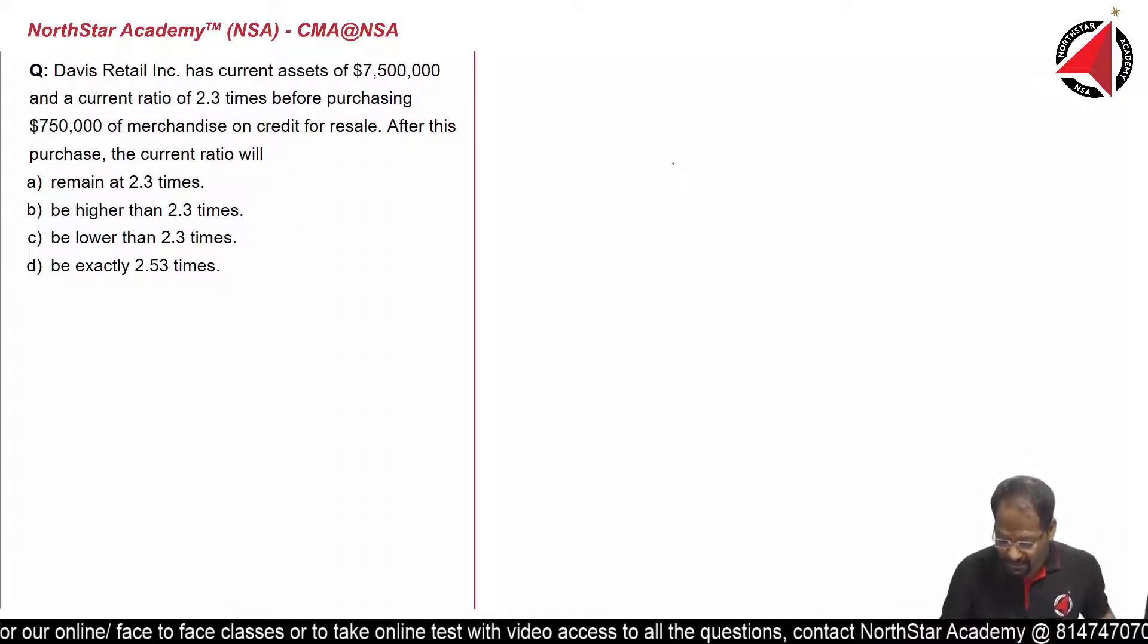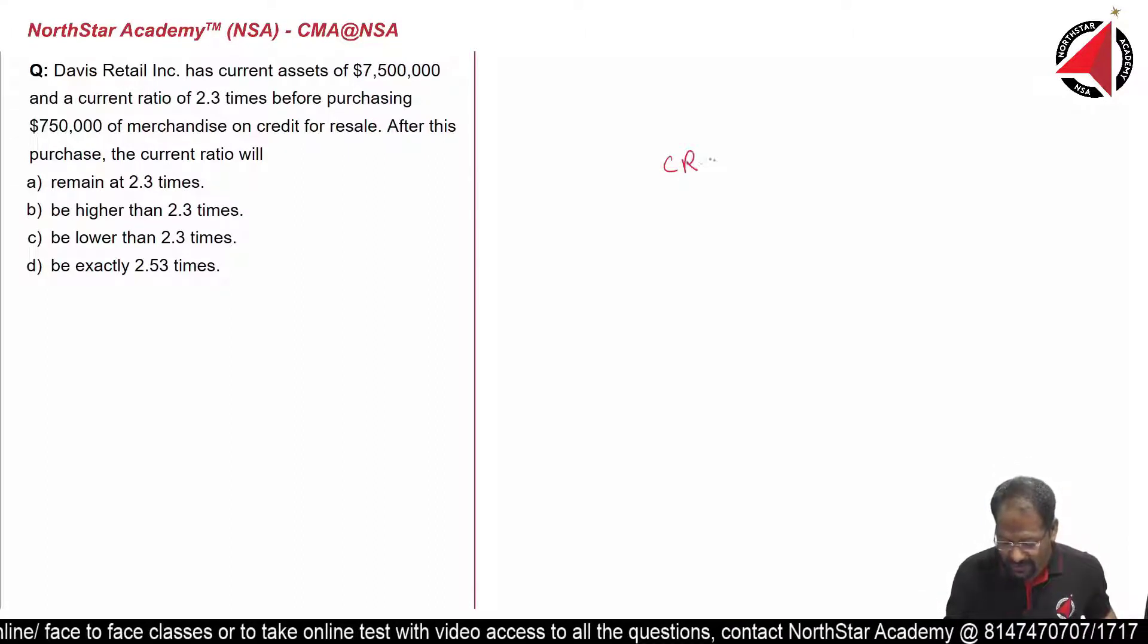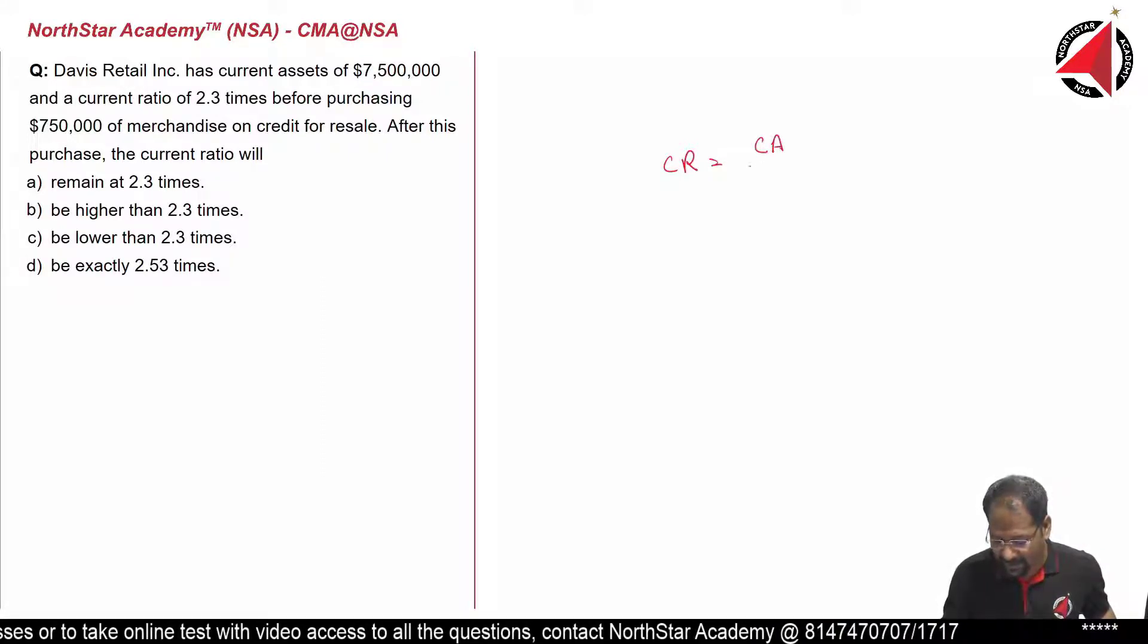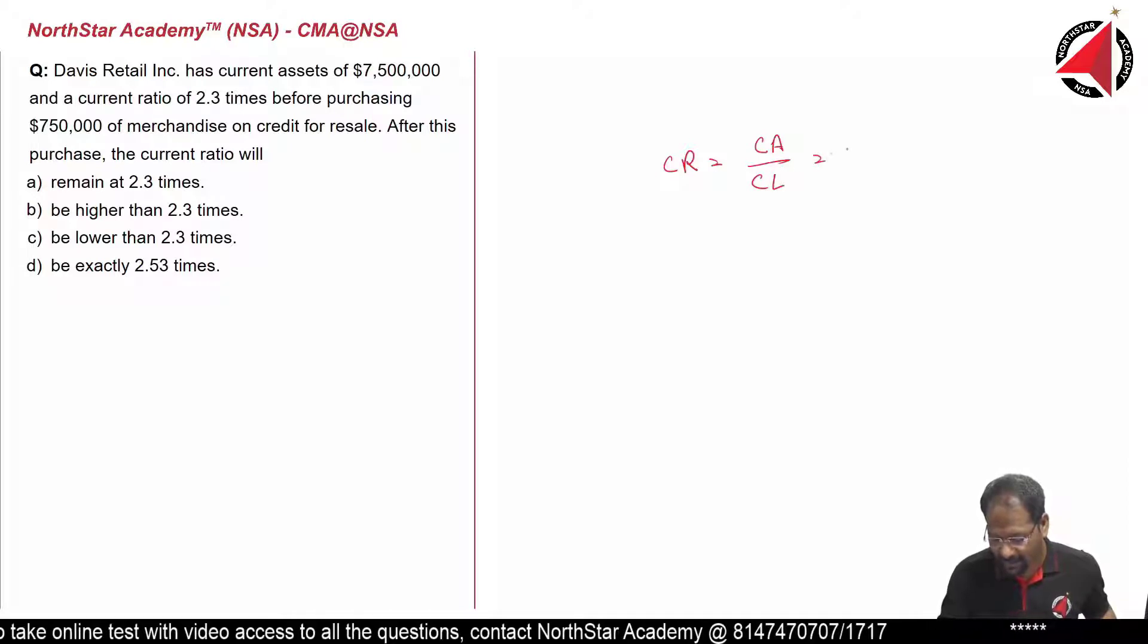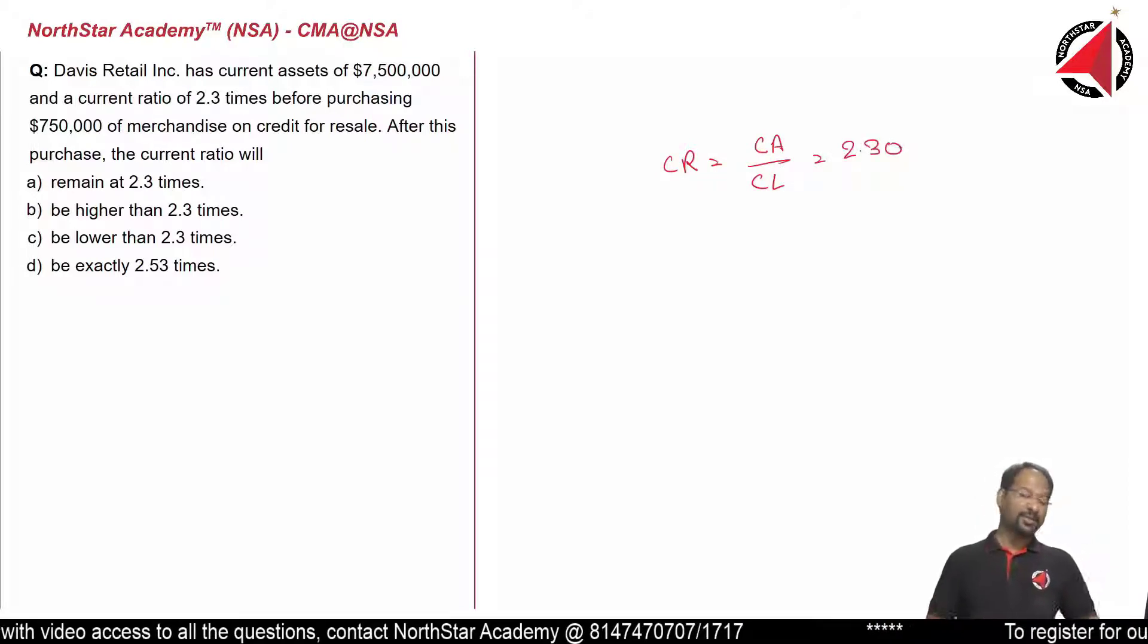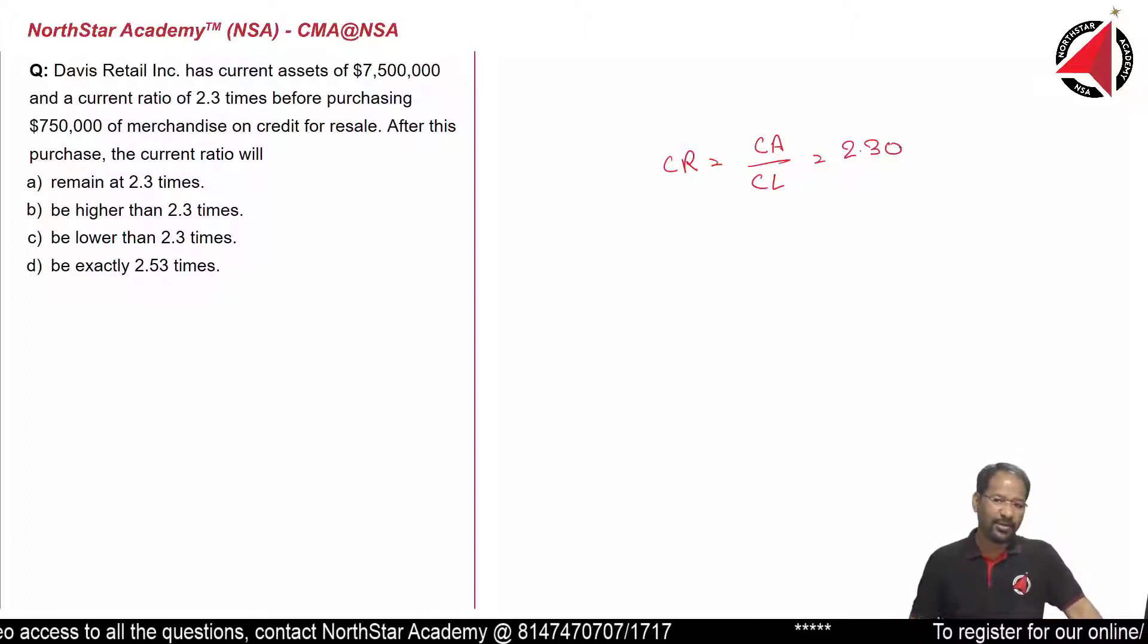First, we need to find out what is the current ratio, and it is mentioned as 2.3 times, or current assets divided by current liability equals 2.30. Using this formula, can we find out current liability?